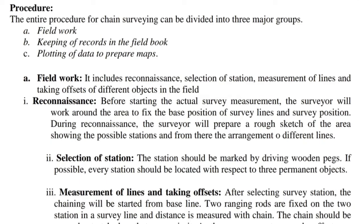The entire procedure for chain surveying can be divided into three major groups: A. Fieldwork, B. Keeping of records in the field book, and C. Plotting of data to prepare maps. Fieldwork includes reconnaissance, selection of station, measurement of lines, and taking offsets of different objects in the field.